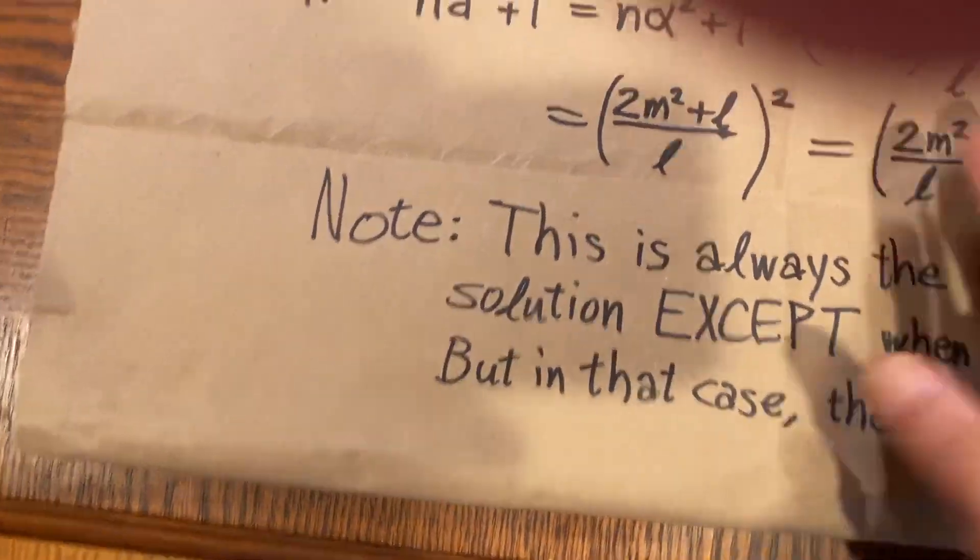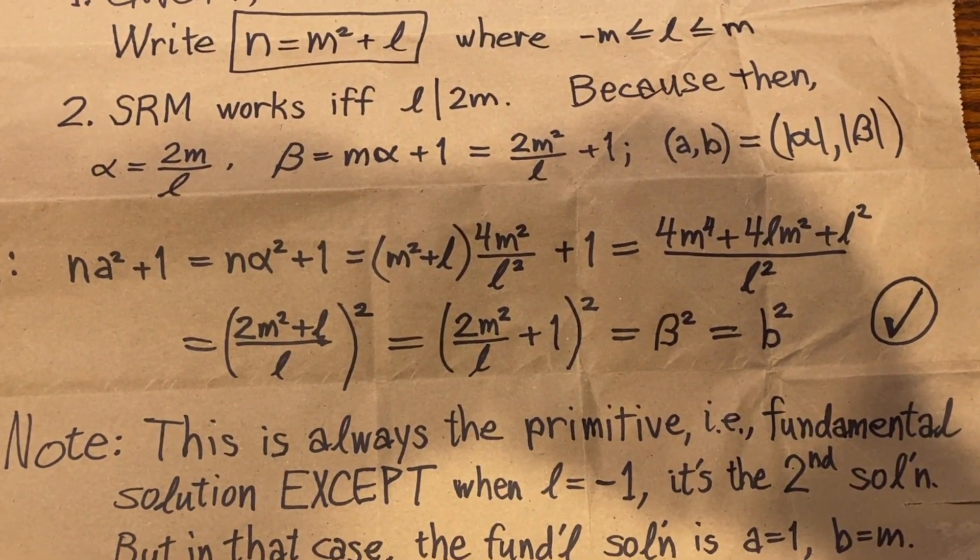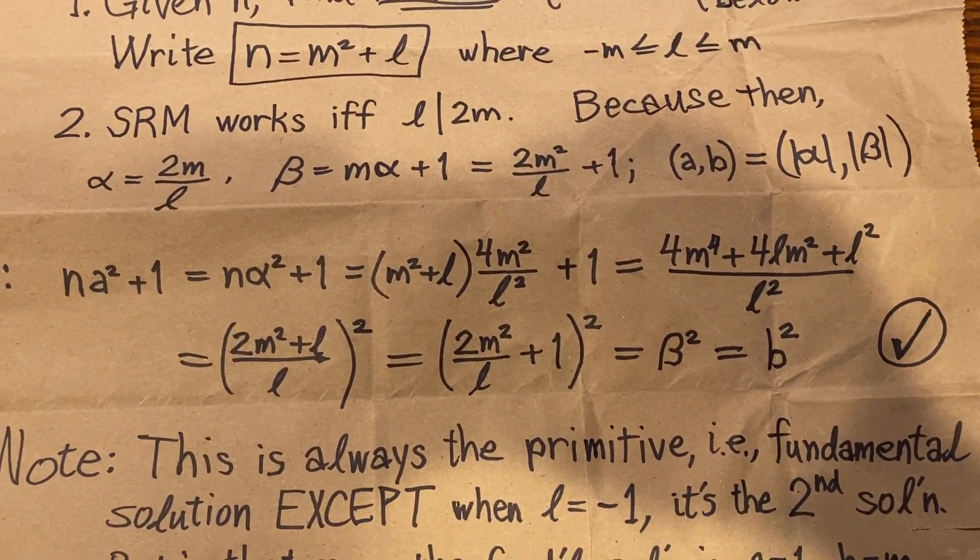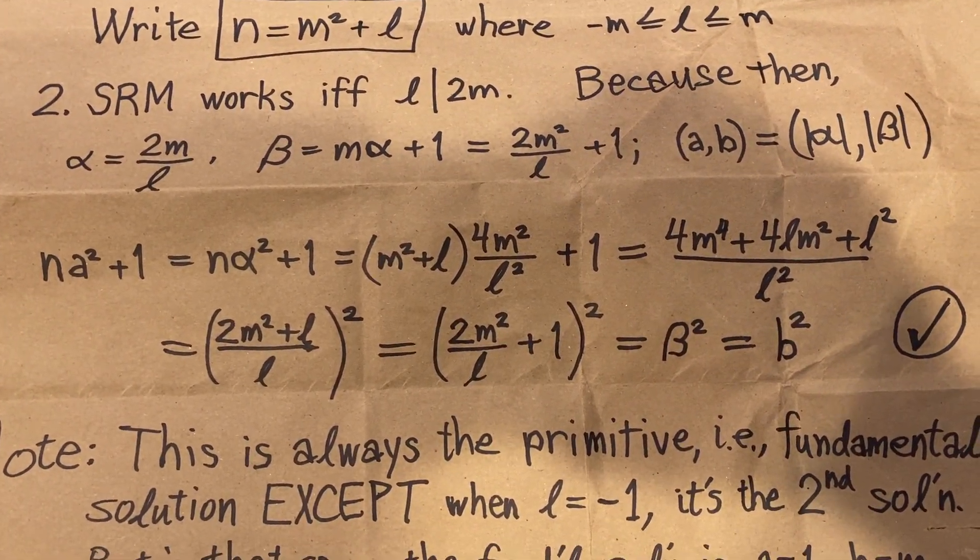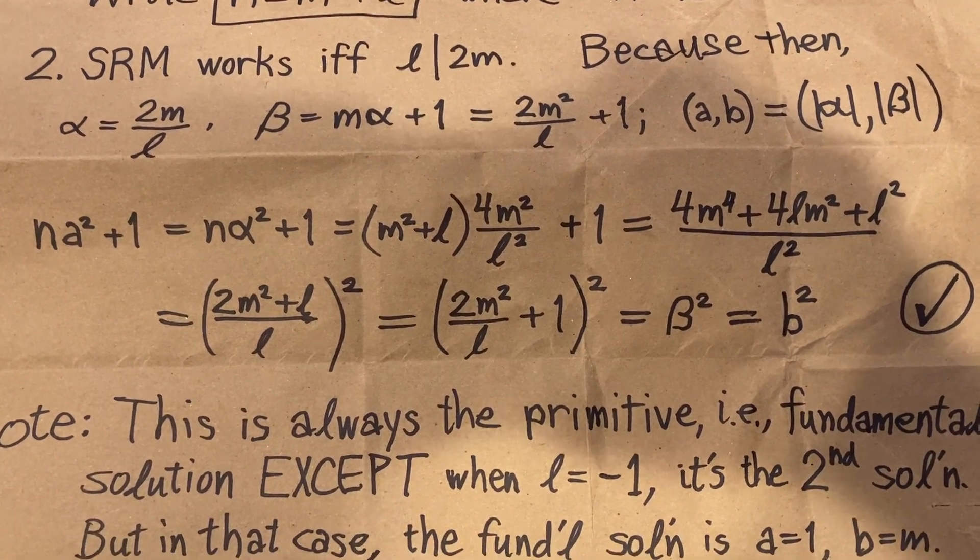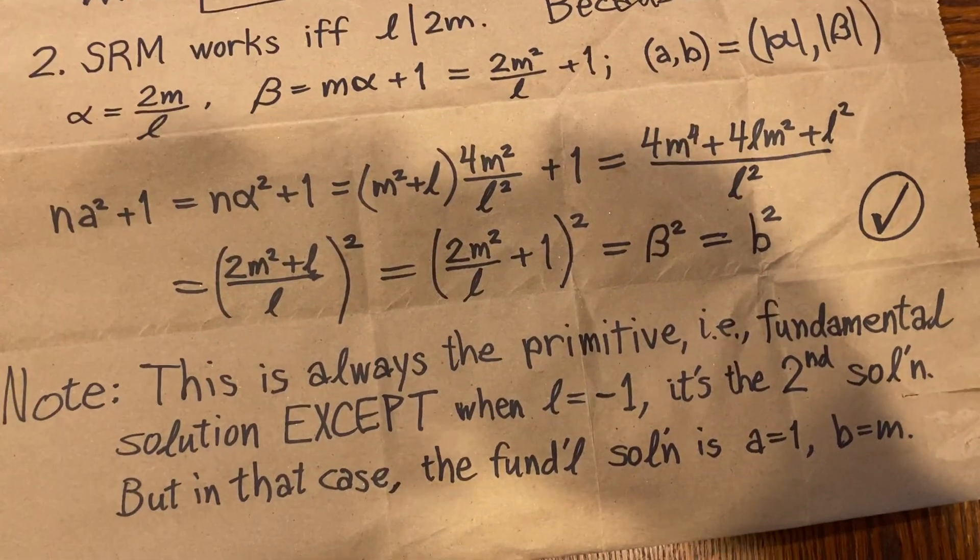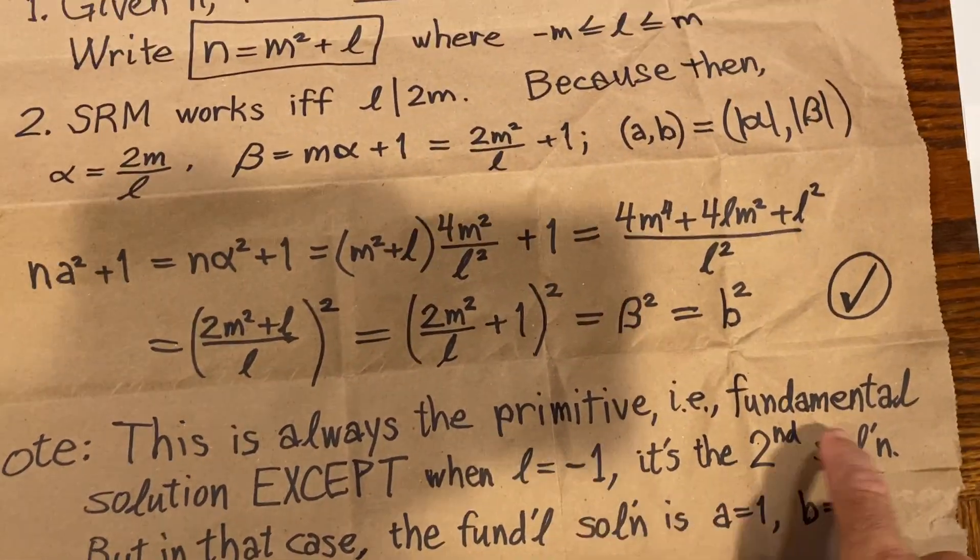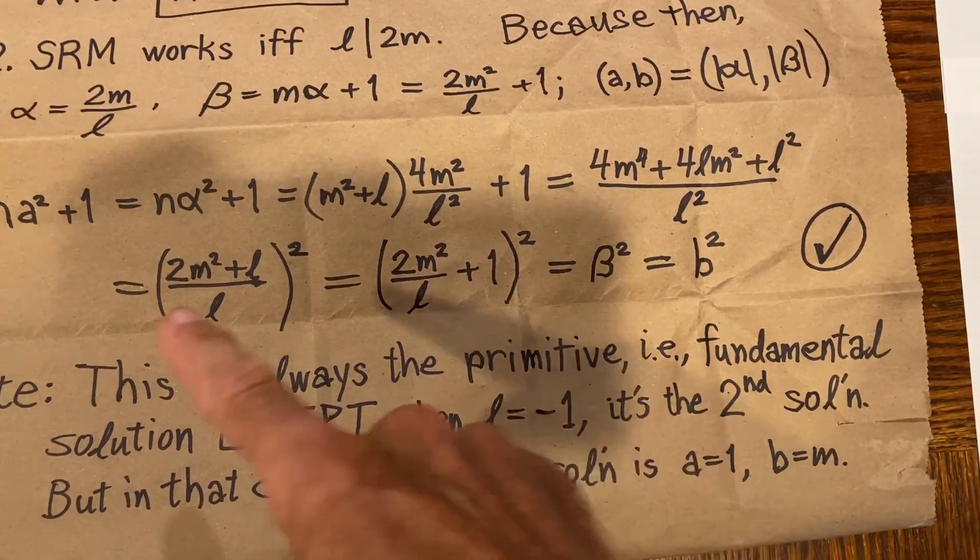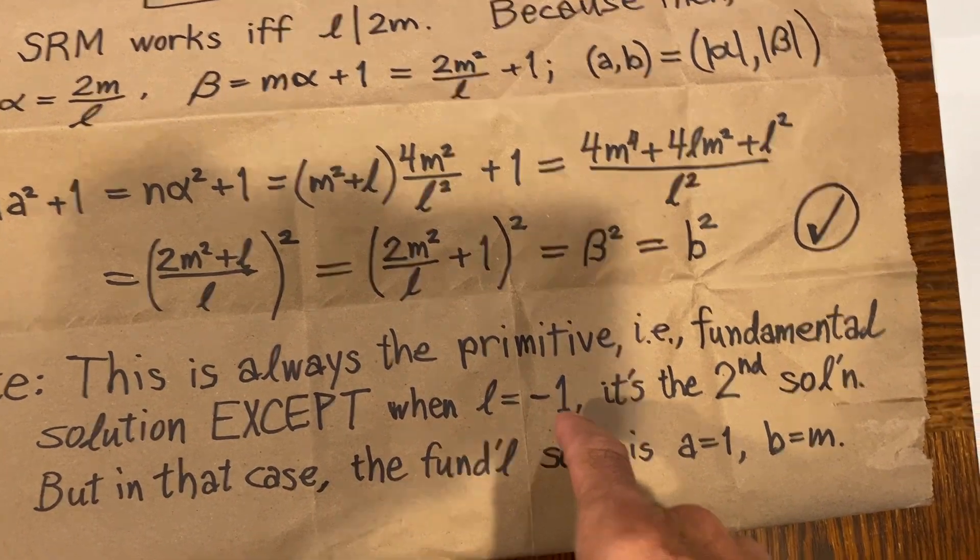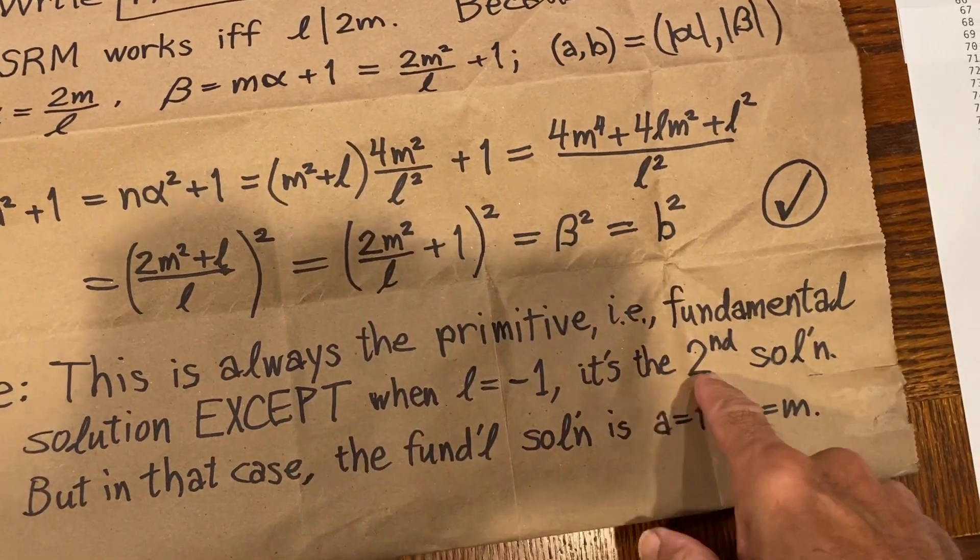Now, we can check that. And here's the algebra that shows that it's true. You can check that for yourself if you like. Pause the video, check it out, and you'll find I'm sure that it is correct. Now, this solution that we find this way, when we can, is always the primitive fundamental solution except when that square remainder is minus 1. That is, when n is 1 less than a square, m squared minus 1. And in that case, this method gives the second solution.